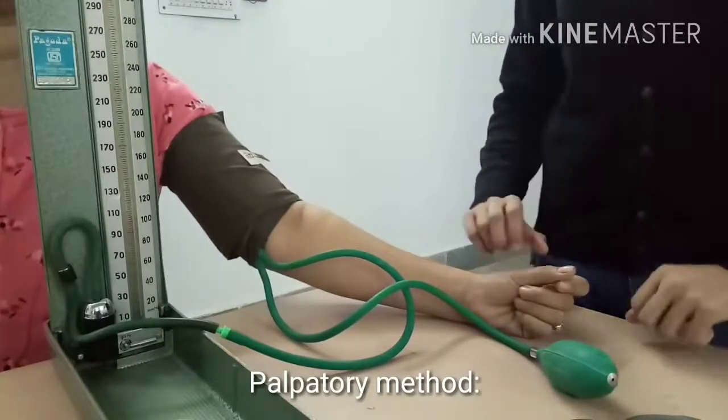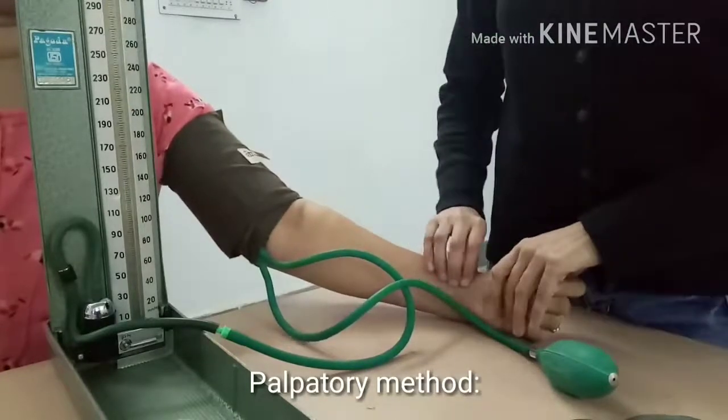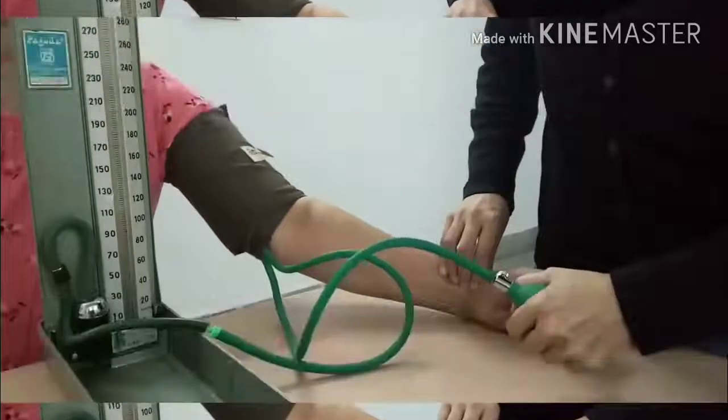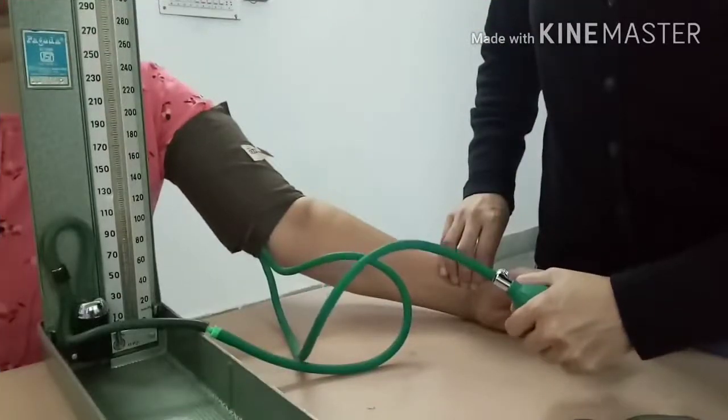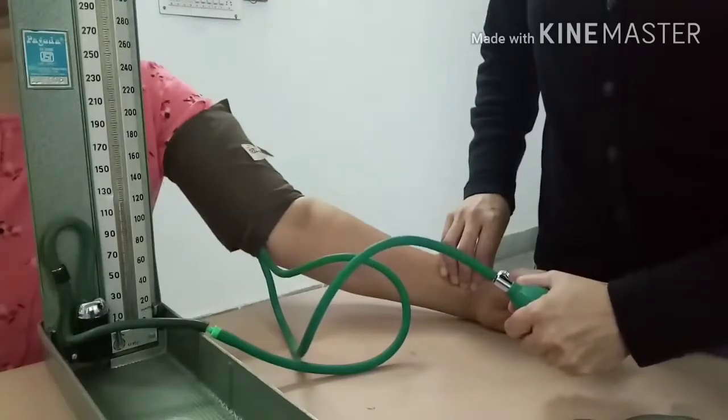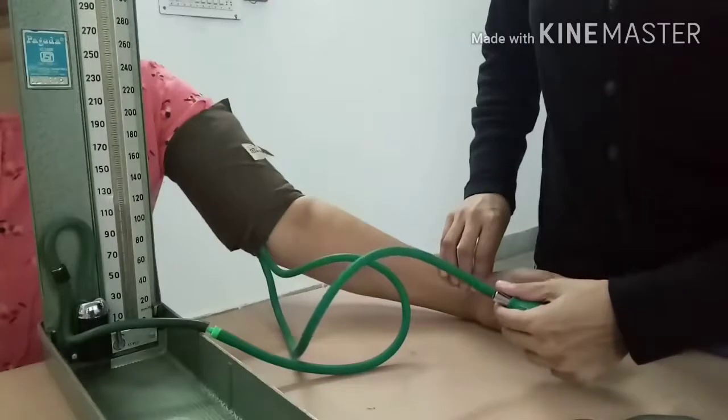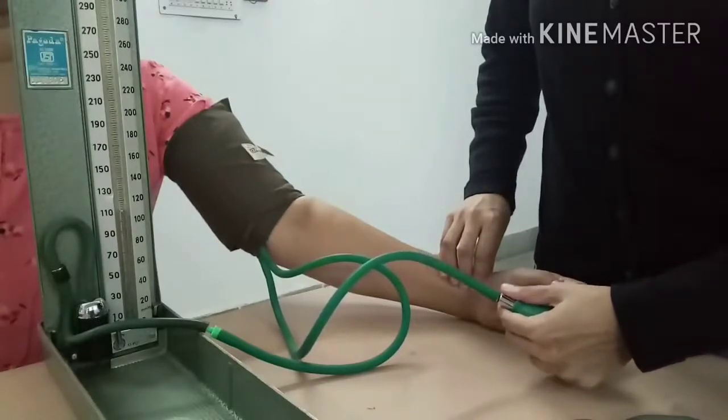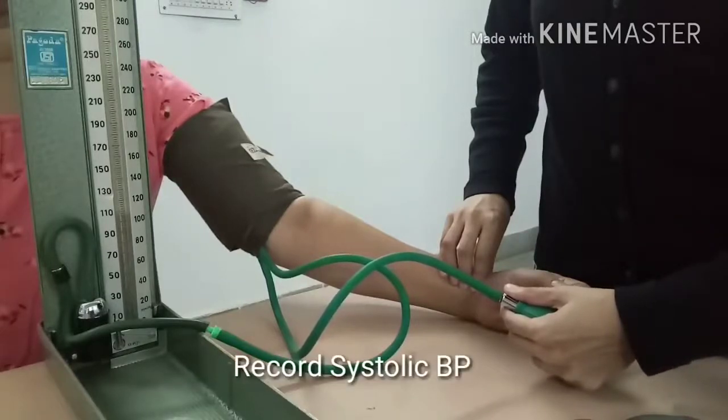Palpate the radial pulse. Inflate the bag gradually till the pulse at the wrist disappears, then deflate the cuff very slowly and note the pressure at which first pulsation appears over the radial artery.